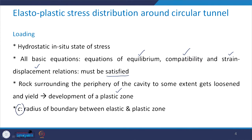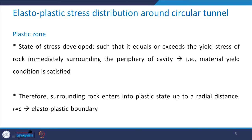C is defined as the radius of the boundary between the elastic and the plastic zone. The state of stress which develops equals or exceeds the yield stress of rock immediately surrounding the periphery of the cavity — that is, the material yield condition is satisfied — and therefore the surrounding rock enters into the plastic state, measured up to a radial distance C, called the elasto-plastic boundary.